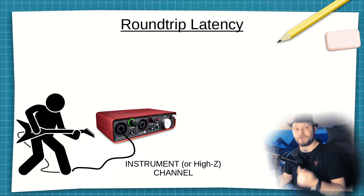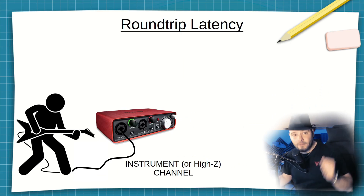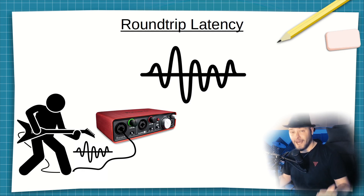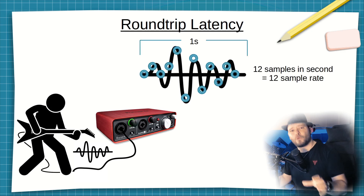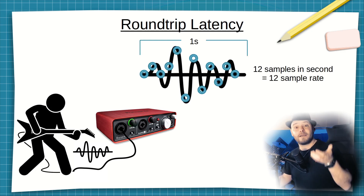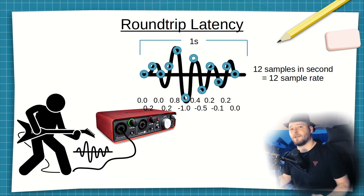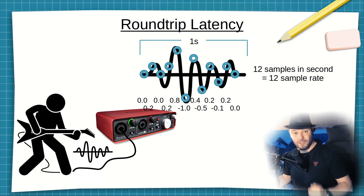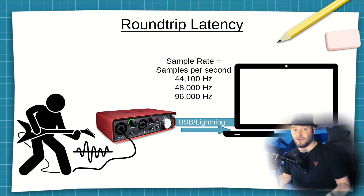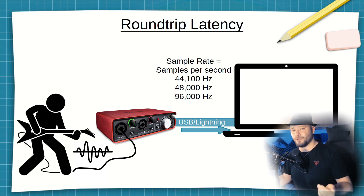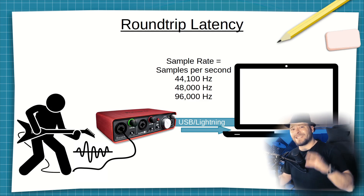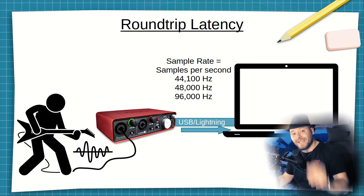But then you need to worry about roundtrip latency. Here's how it works: your guitar outputs an analog signal and that signal gets sampled by the analog-to-digital converter in the audio interface. If you take 12 samples from 1 second of sound, your sample rate is 12 — that's what sample rate means: how many discrete digital values are sampled from one second of audio. 12 is obviously not usable. The minimum you need is 44,000 samples per second to have a good digital representation of the original analog signal.